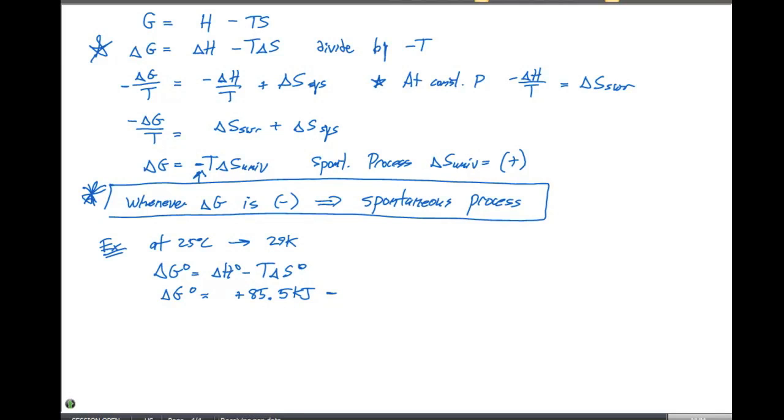And we have to convert that delta S value over to kilojoules. So this will tell us that our delta G naught, if we do the math, is gonna be positive 21.3 kilojoules.